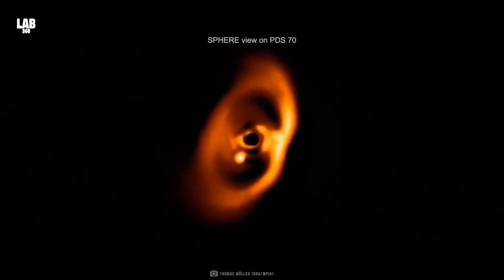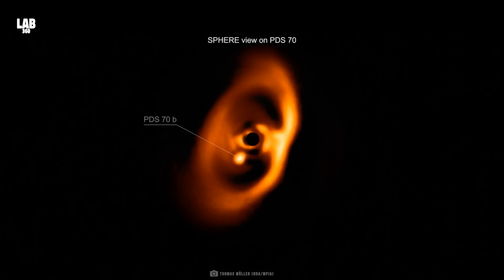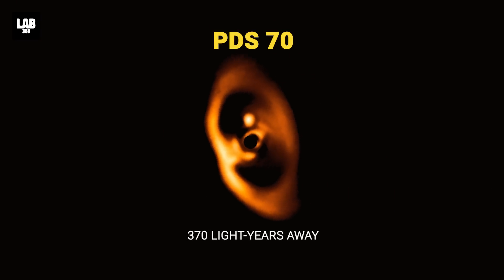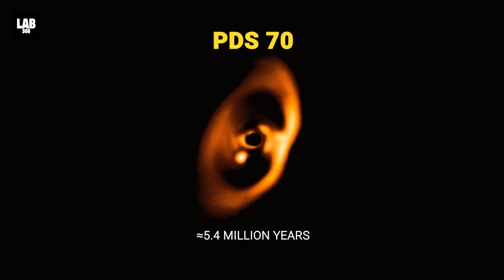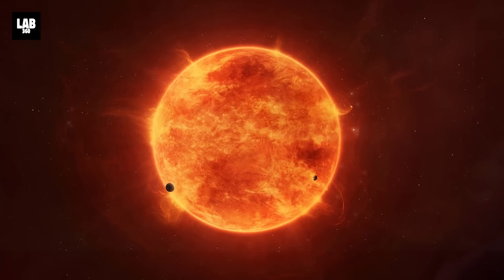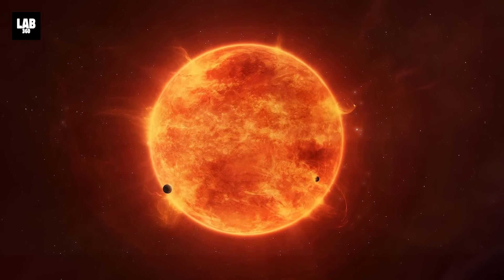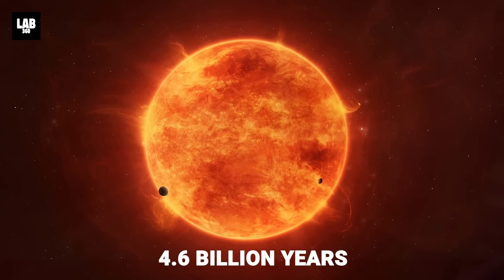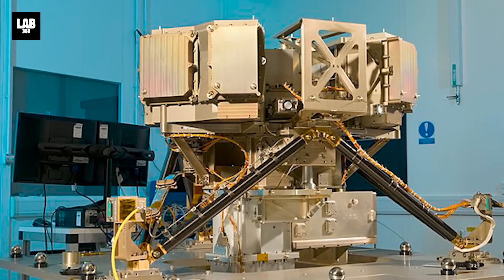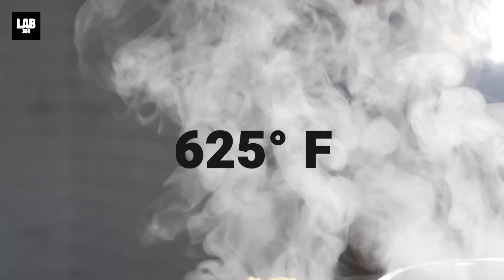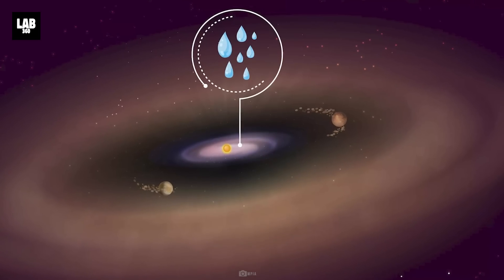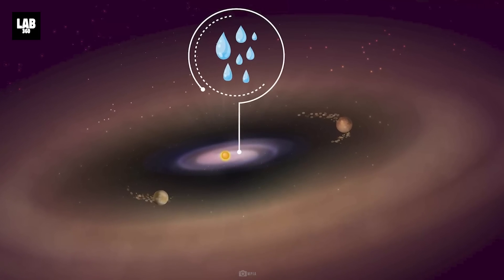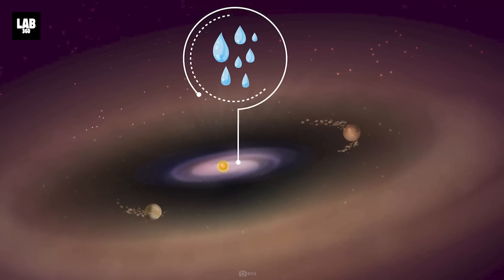Recently, researchers have concentrated on a young star, PDS-70, which is located nearly 370 light-years away from Earth and is just around 5.4 million years old. If we compare it with the age of our Sun, it is around 4.6 billion years old. By using JWST's mid-infrared instrument, scientists have discovered water in the form of hot vapor at around 625 degrees Fahrenheit, near the center of the planet-forming disk of gas and dust, encircling the star, PDS-70.